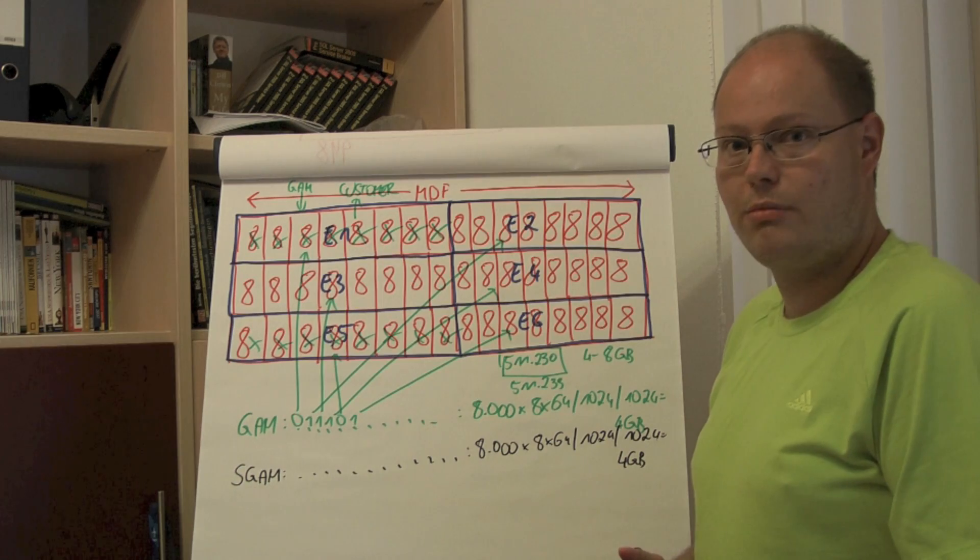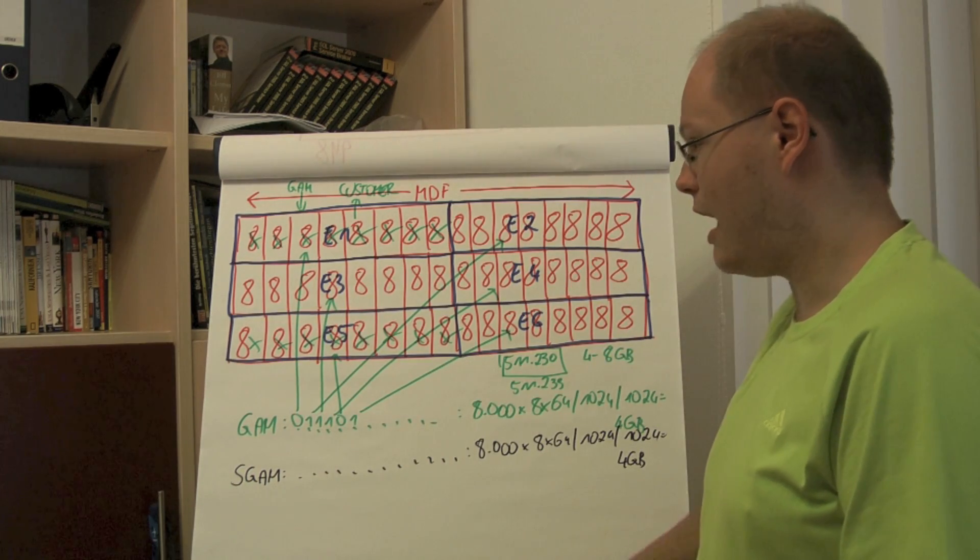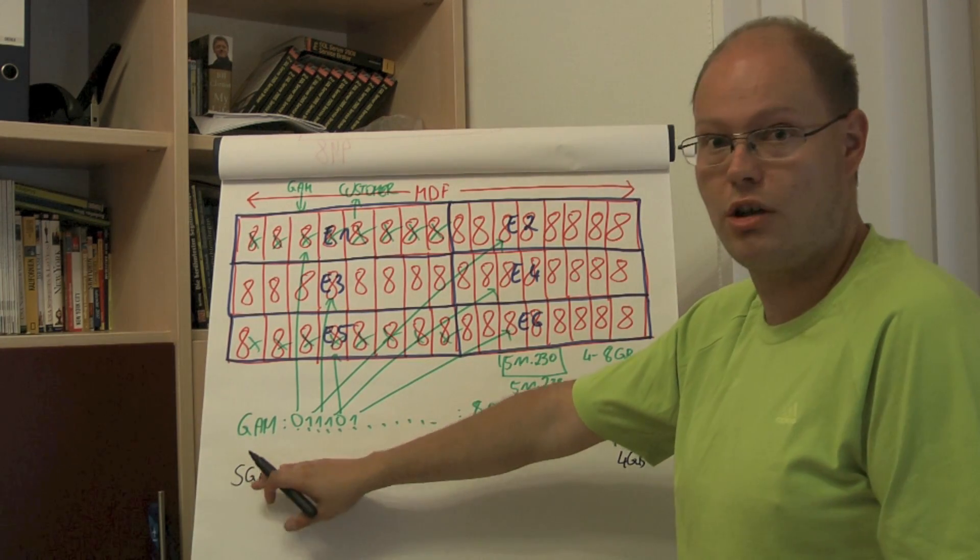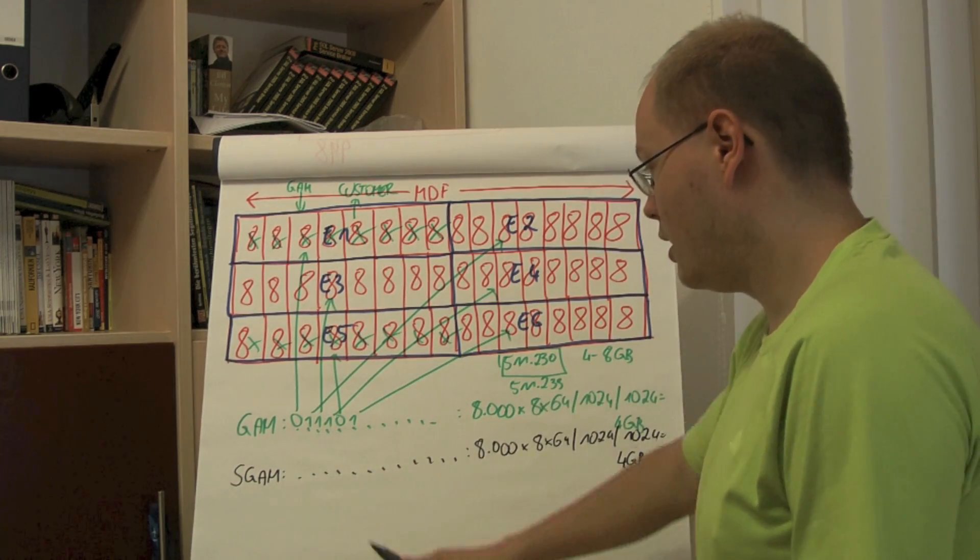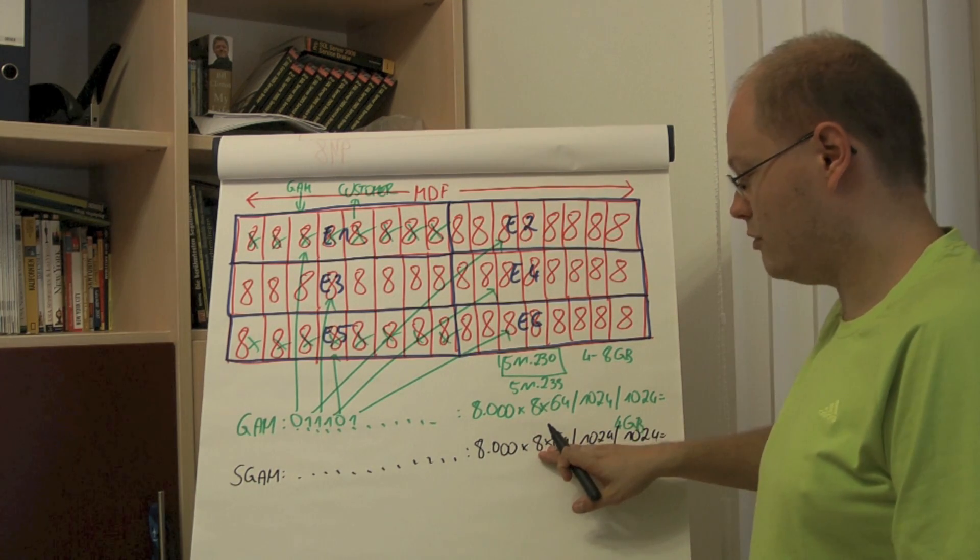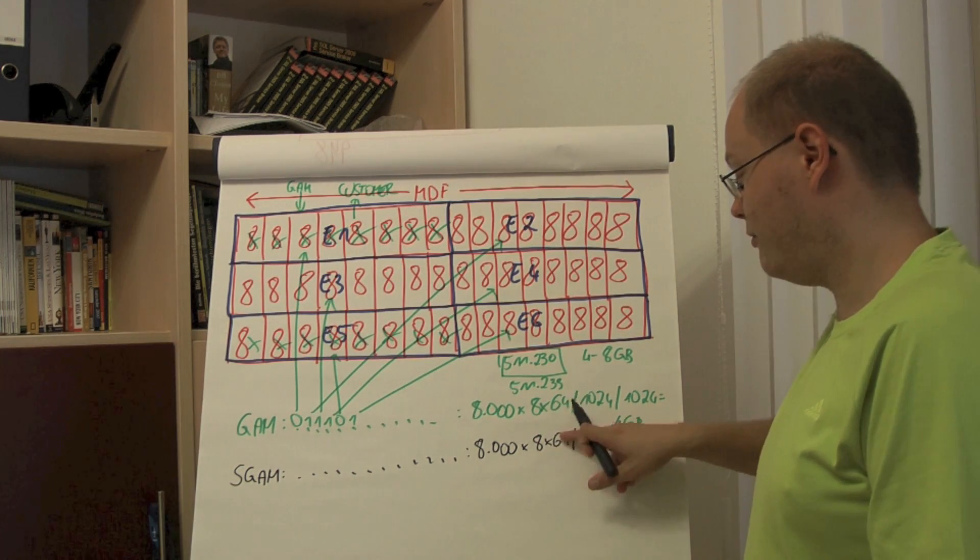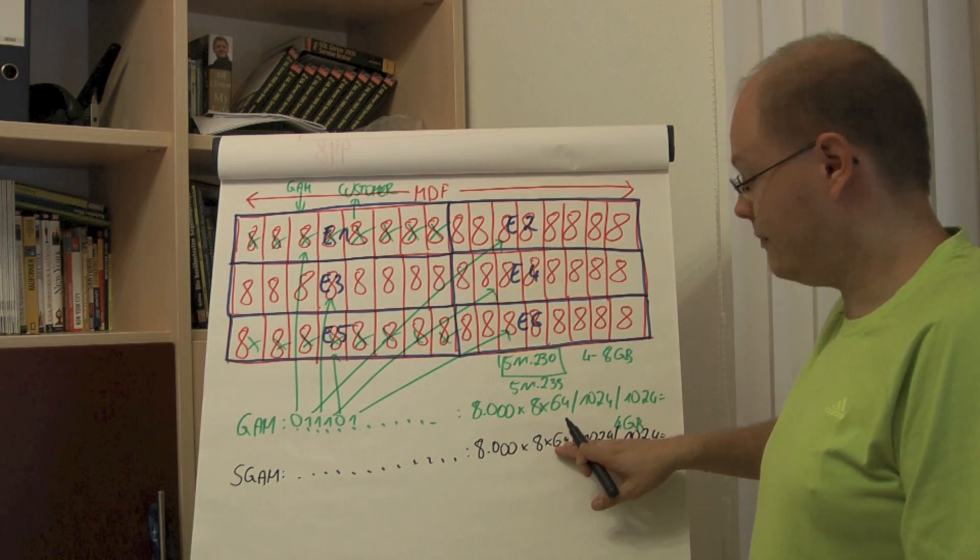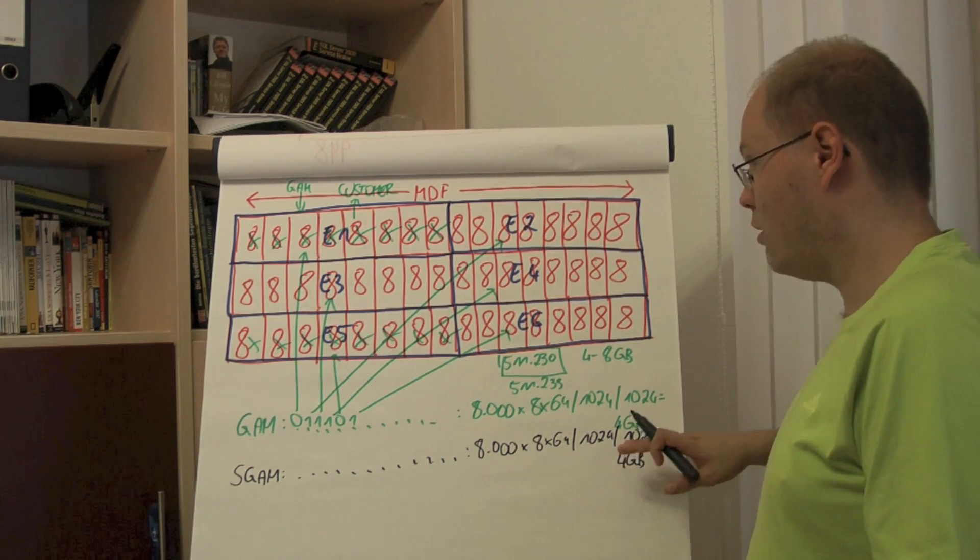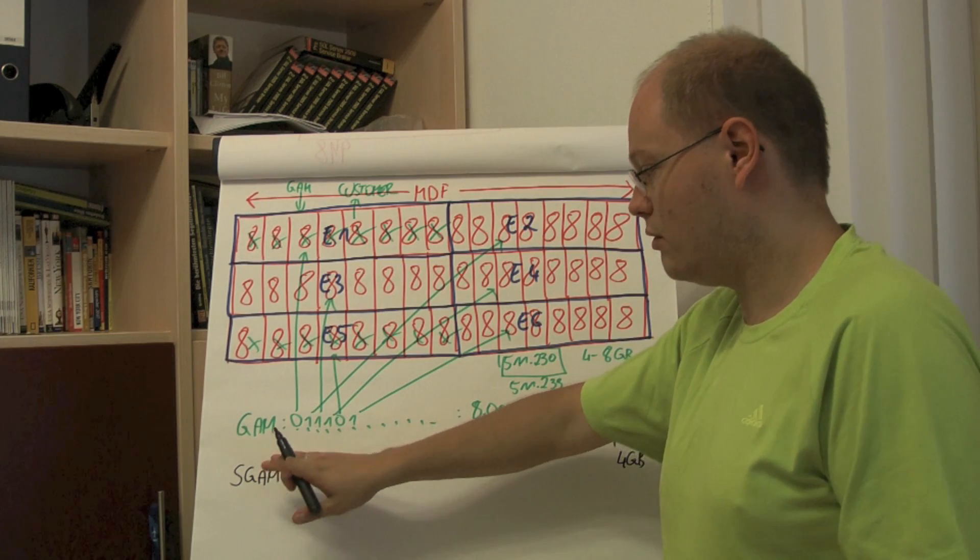Besides a uniform extent, which is described with a GAM page in SQL Server, SQL Server also implement so-called mixed extents, which are described through a SGAM page, Shared Global Allocation Map Page. The SGAM page, again, has 8,000 bytes, which means we have 64,000 bits on the label. Each bit represents an interval of 64 kilobytes. An extend, which means, again, with an SGAM page, we can address an interval of 4 gigabytes. How is SQL Server creating that bit mask?